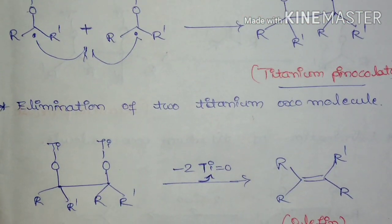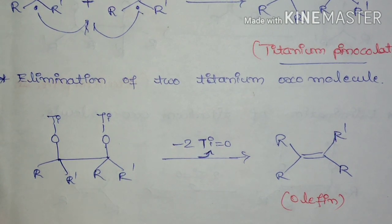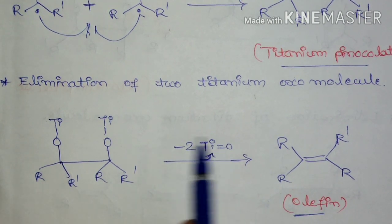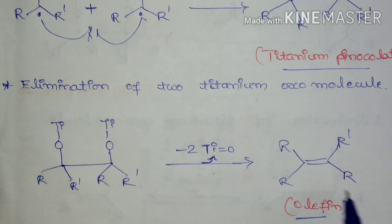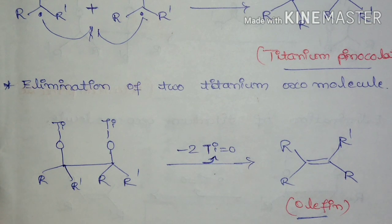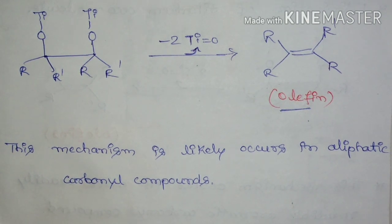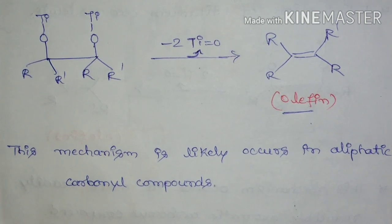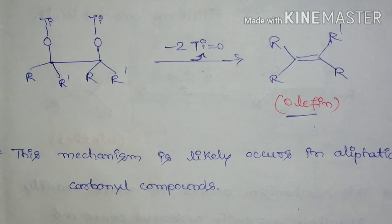This titanium pinacolate will lose two titanium oxo molecules, which leads to the formation of olefin. So this titanium pinacolate is going to lose two molecules of titanium oxo, leading to the final product olefin. This one-electron mechanism is likely to occur in the case of aliphatic carbonyl compounds — if the starting material is an aliphatic carbonyl compound, then this one-electron transfer mechanism is the probable mechanism.